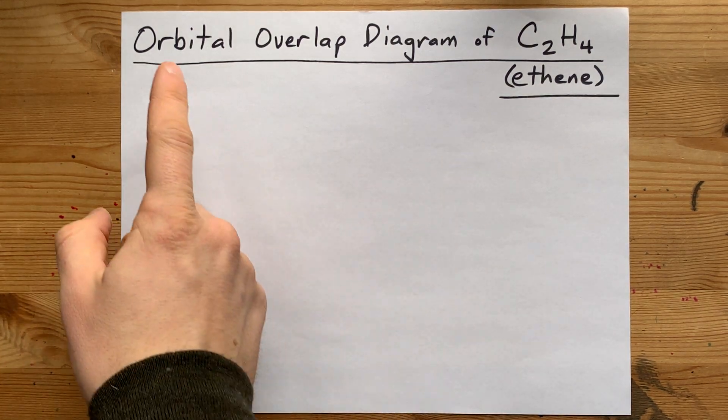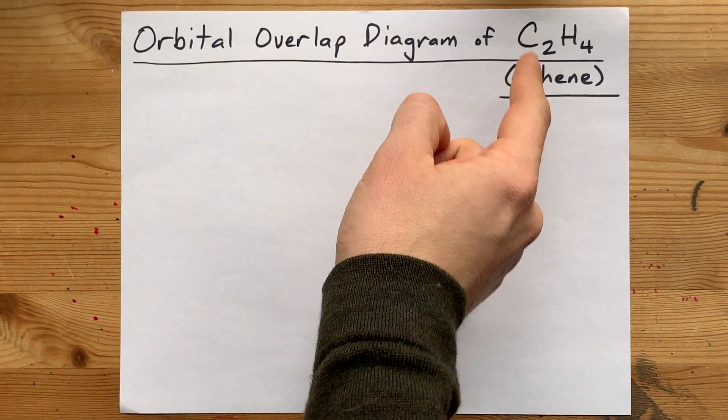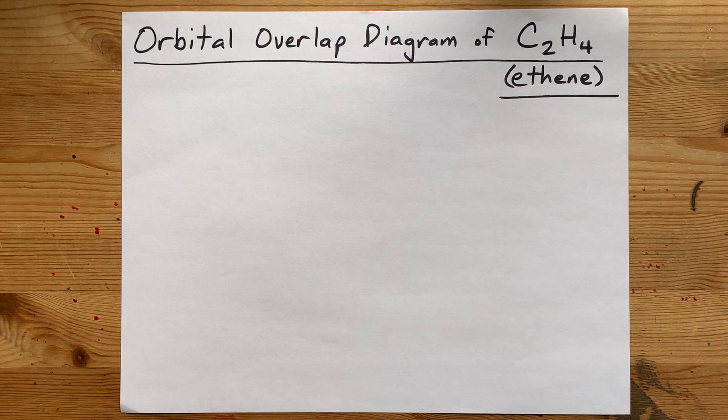Well, we got a good one for you today, the orbital overlap diagram for ethene, C2H4.